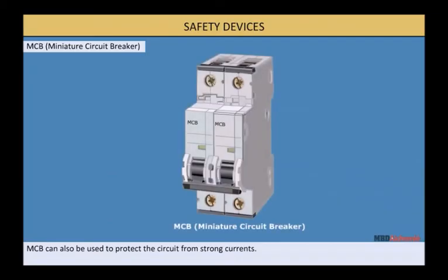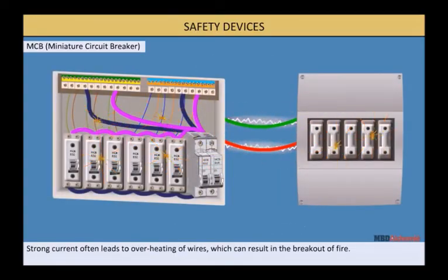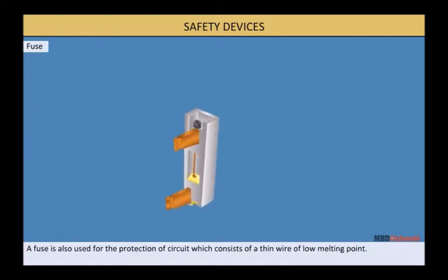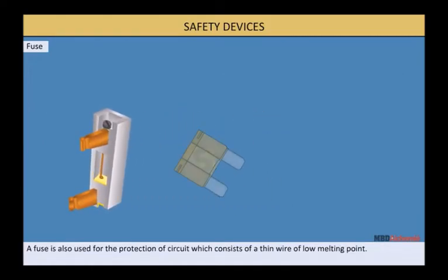Safety devices: Mini circuit breaker used to protect circuit from strong current. Strong current often leads to overheating of wires, which can result in the breakout of fire. Fuse is also used for protection of circuit, which consists of a thin wire of low melting point.